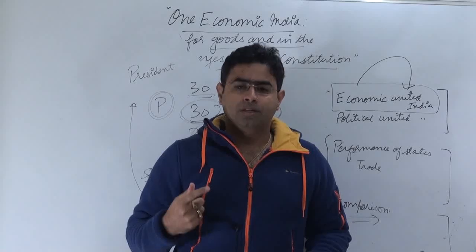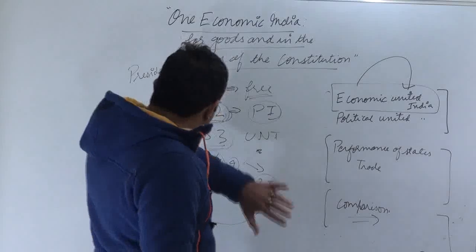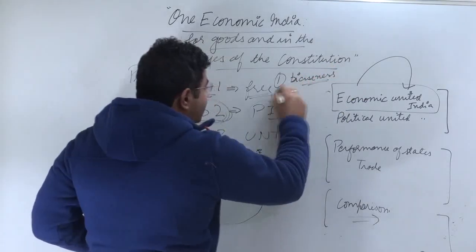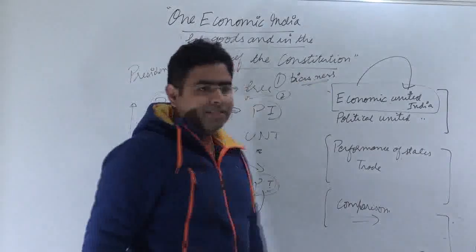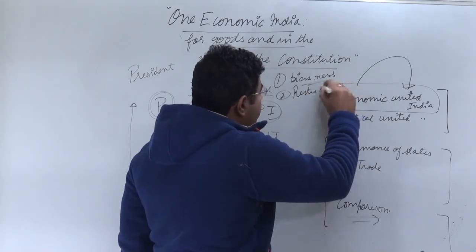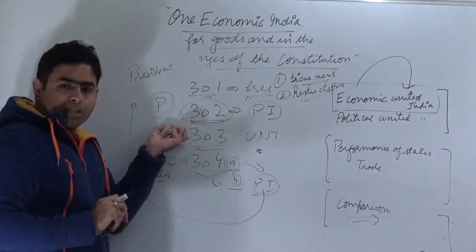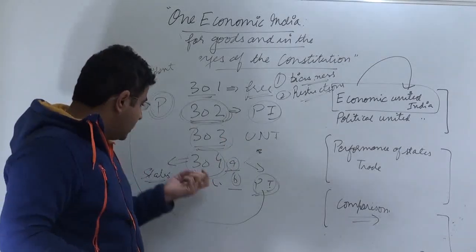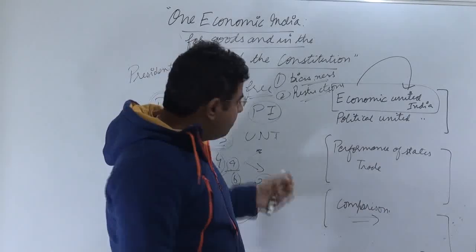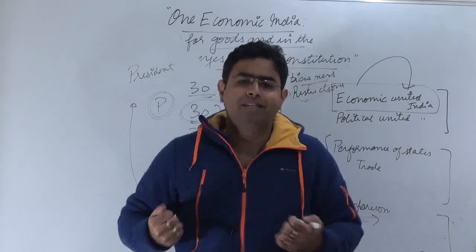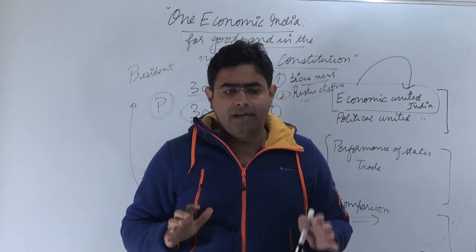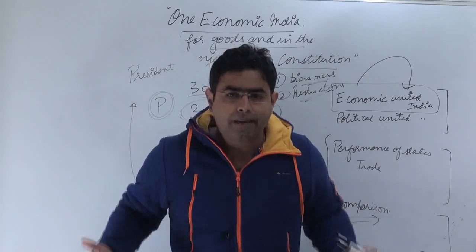Reading all four articles together, one thing is very clear — biasness should not be there and you cannot be biased towards other states. The second thing is that yes, restrictions can be imposed on trade. Article 302 says Parliament can restrict trade; Article 304 says states can also restrict trade in public interest. So basically, the message is that though trade is free to be conducted in India, it is not restriction-free — restrictions can be imposed.